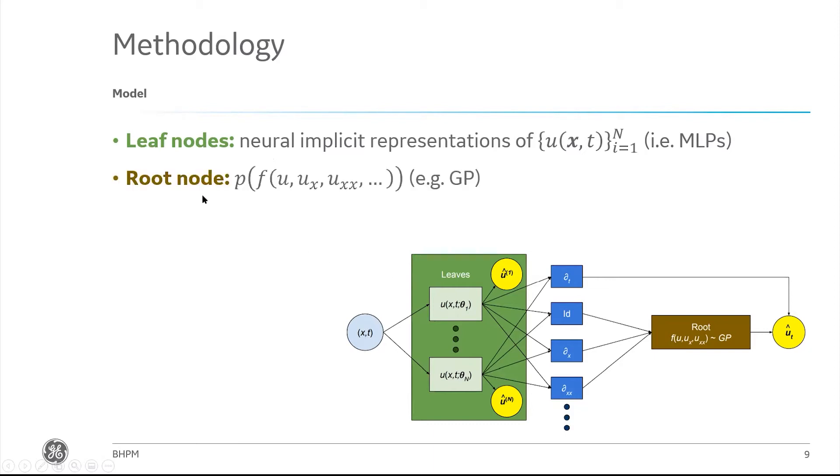The second component we're going to have is this root node, which is over on the right here. That's going to be our operator, expressed as a function. This corresponds to a local operator or function, so the arguments are going to be, for example, U, the derivative of U with respect to X, second derivative, etc. Something that should be relatively familiar from the sort of PINNs formalism.